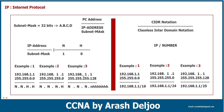In example three: 192.168.1.1 with the subnet mask 255.255.255.128 — this means the first 8 bits, second 8 bits, third 8 bits, and also the first bit of the last octet (octet four) are the network bits. This means we have 25 network bits and also seven host bits. This is the subnet mask.